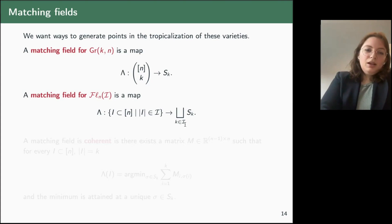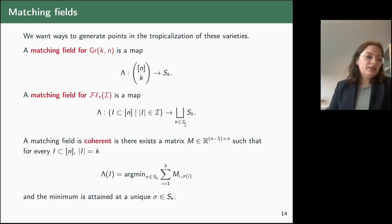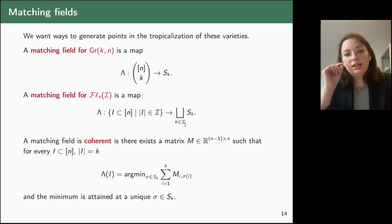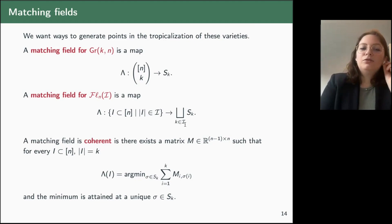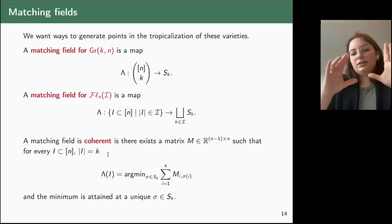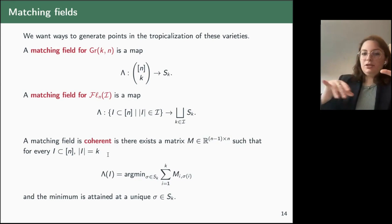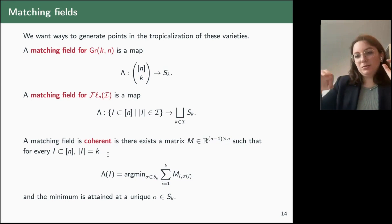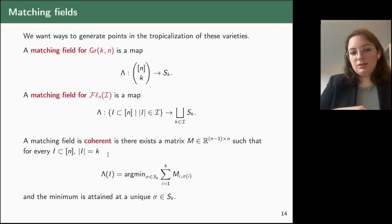We say a matching field is coherent if it is induced by a matrix M: for every subset I of cardinality k, we take the submatrix of M in the columns labeled by I and the first k rows, compute its determinant, and look at which permutation gives the minimum term. We require this minimum to be achieved by a unique permutation. If we have a coherent matching field, we get a weight vector — the minimum term in the determinant of the corresponding minor.